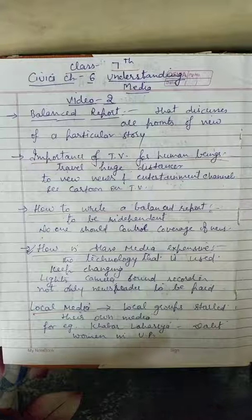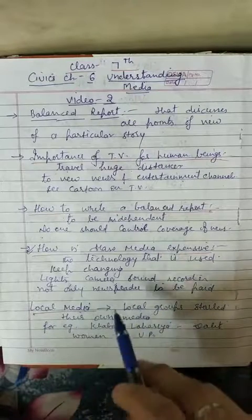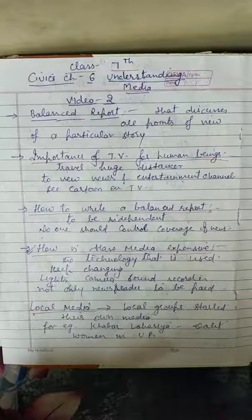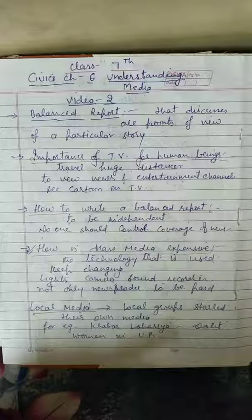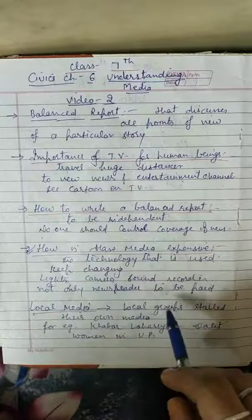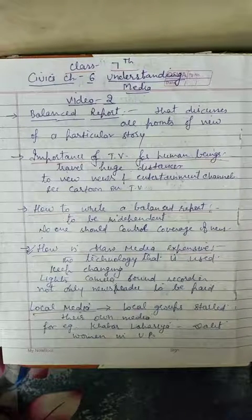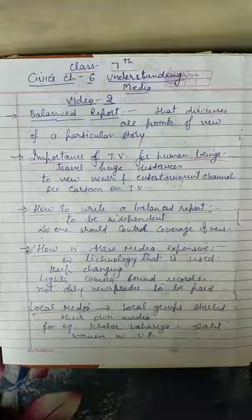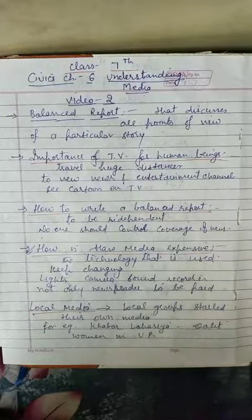A TV studio in which a newsreader sits has lights, cameras, sound recorders, etc. — all these cost a lot of money. It is not only the newsreader who needs to be paid, but also a number of other people who help to broadcast the news together. Due to this cost, mass media needs a great deal of money to do its various works. In this way, most TV channels are a part of a big business house.